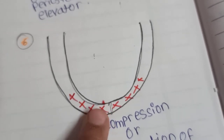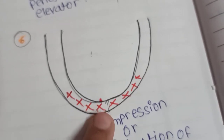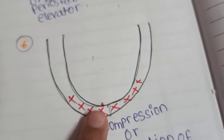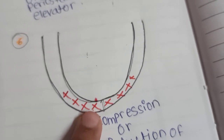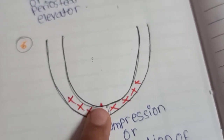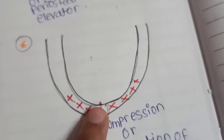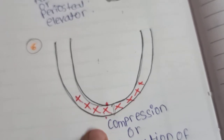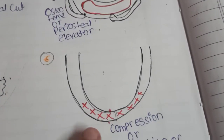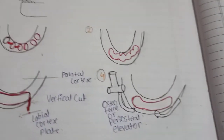After giving the suture, you can see that after doing the alveolar plasty, the labial plate is reduced and it comes toward the palatal. This is all about alveolar plasty.